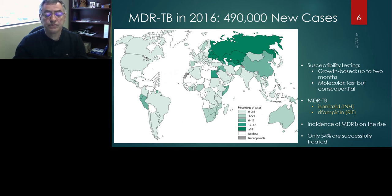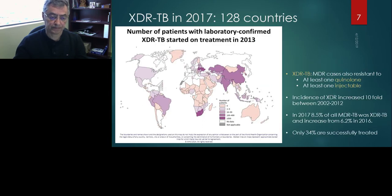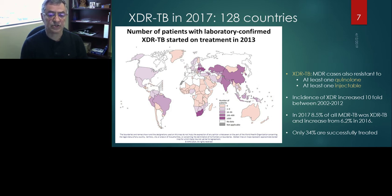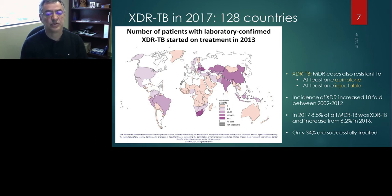People who get the message that they might have MDR-TB either don't believe it or lose hope and are lost to follow-up. The next level is extensively drug resistance — XDR-TB. This is established when resistance to rifampicin and isoniazid has been determined, and additionally the bacteria are resistant to at least one fluoroquinolone group of drugs and at least one injectable group, such as amikacin, kanamycin, or capreomycin. Incidence of XDR increased tenfold between 2002 and 2012.